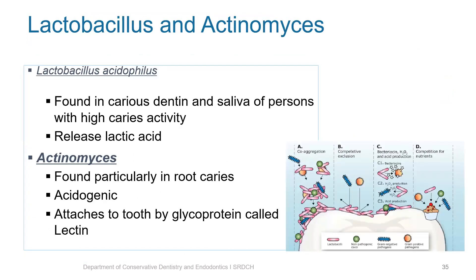Lactobacilli are found in carious dentin and saliva of persons with high caries activity. These are also acidogenic microorganisms and are considered responsible for initiation of pit and fissure caries. Actinomyces are found particularly in root caries; these are also acidogenic microorganisms and they attach to the tooth structure by a glycoprotein called lectin.